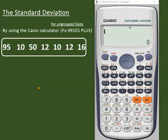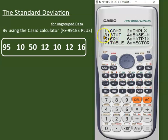Hello everyone, we are going to calculate standard deviation for ungrouped data. First of all, you'll find the statistic mode. So click the mode key and here is the statistic, third option. So I'll click three, then one variable.